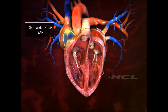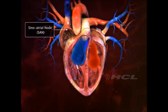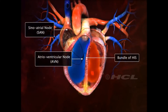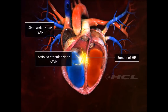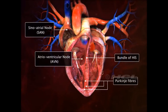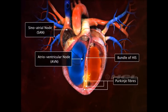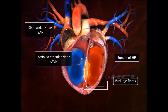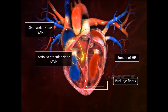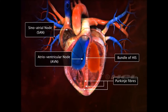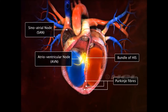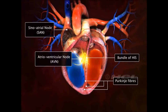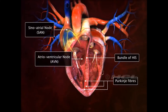The sinoatrial node, atrioventricular node, bundle of His, and Purkinje fibers represent the specialized cardiac tissue. These fibers are auto-excitable as they have the potential to generate electrical activity without any external stimuli. This makes the heart beat continuously.